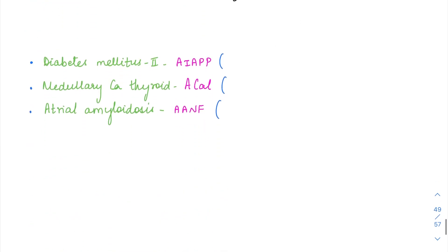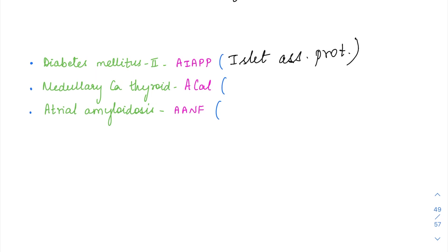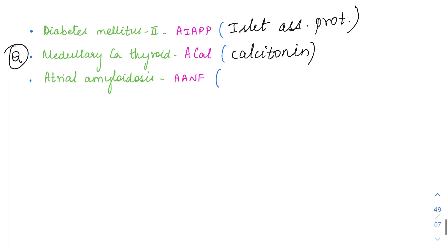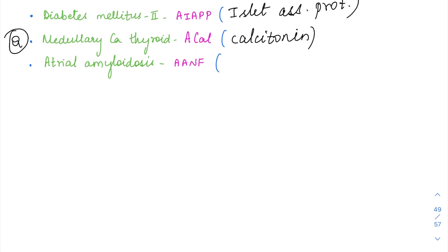In diabetes mellitus type 2, amyloid deposition occurs as AIAPP — islet amyloid polypeptide — in the islets. In medullary carcinoma of the thyroid, the amyloid is A-cal, composed of calcitonin, since calcitonin levels are elevated in this cancer. In atrial amyloidosis, it is A-ANF composed of atrial natriuretic factor.